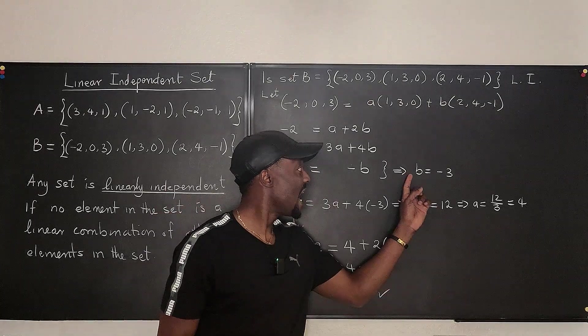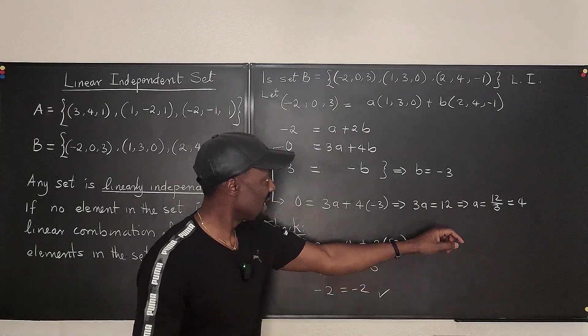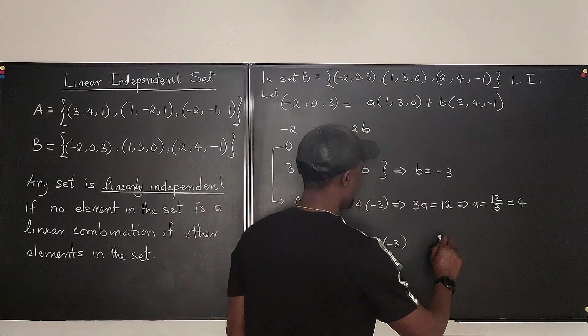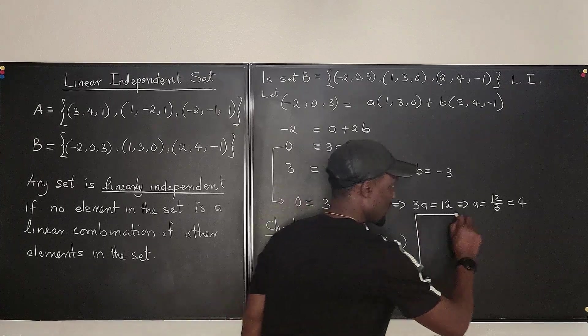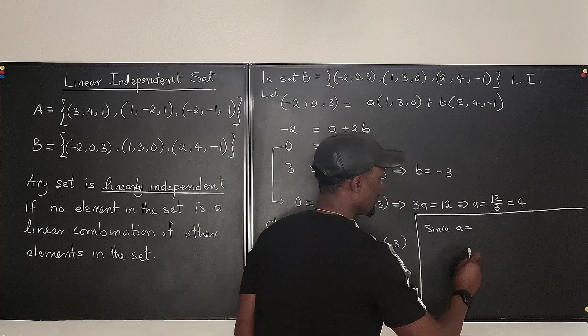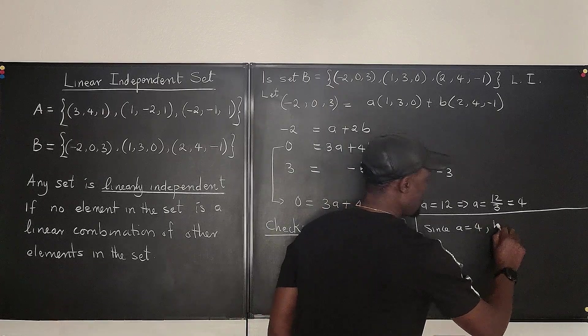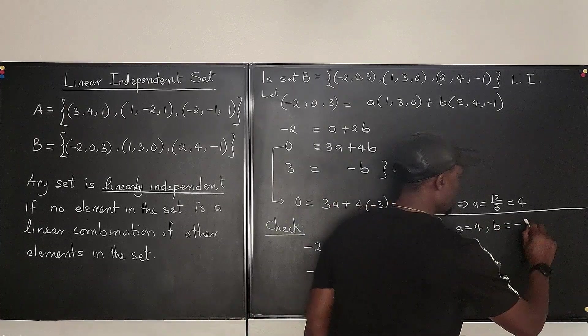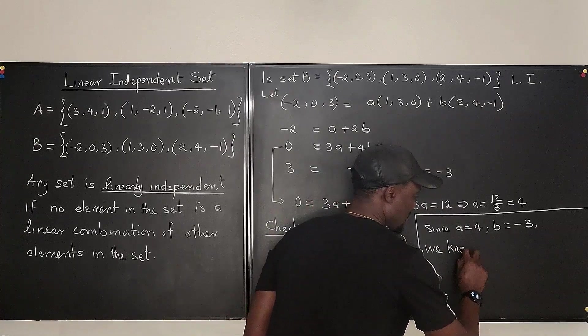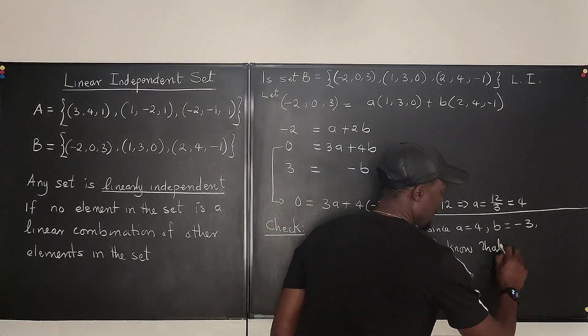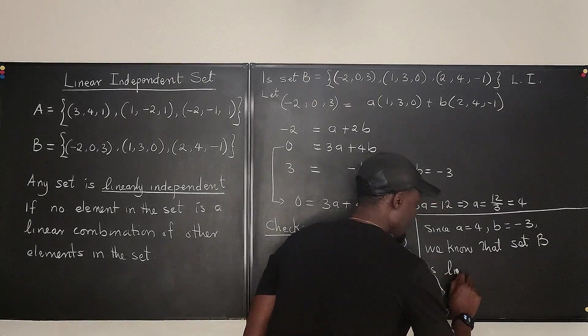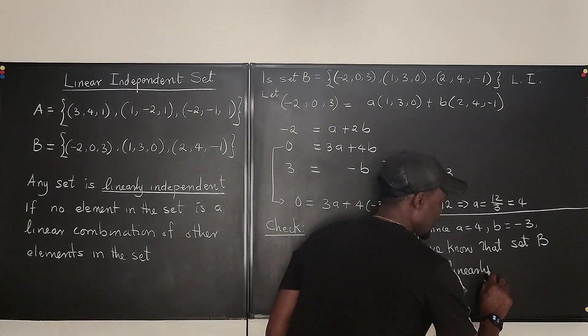Therefore, A and B actually exist. A exists. B exists. So we can say, let's write our conclusion here. Since A equals 4 and B equals negative 3, we know that set B is linearly dependent.